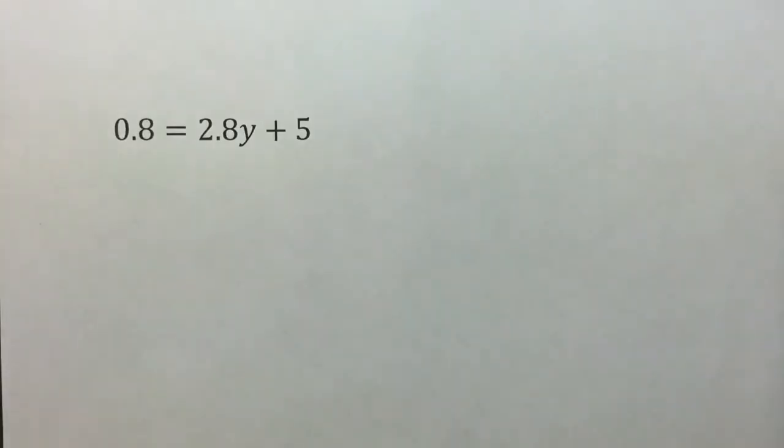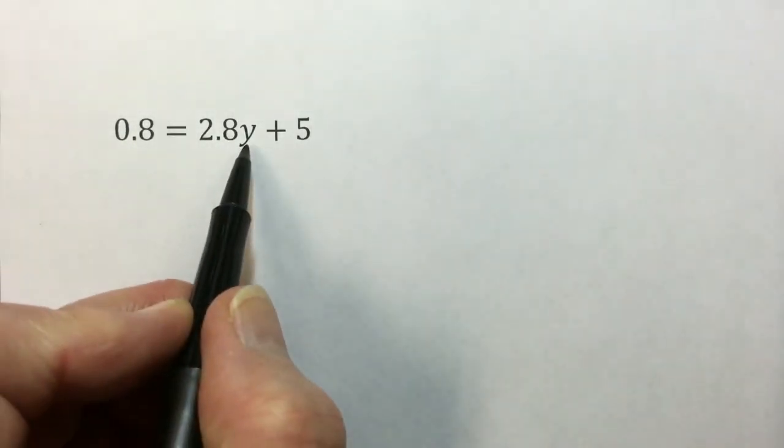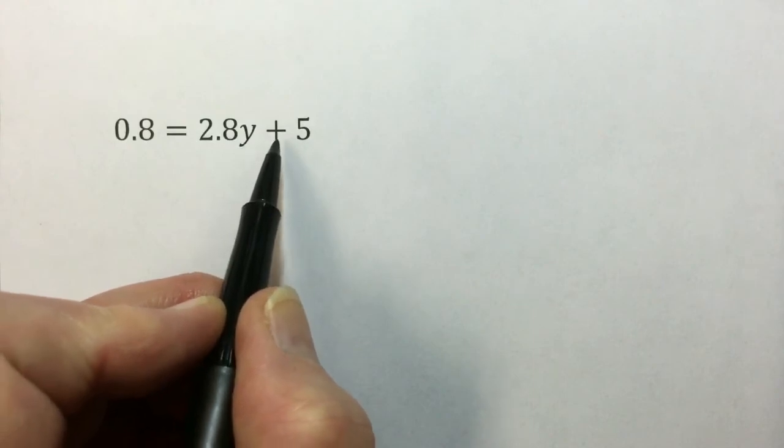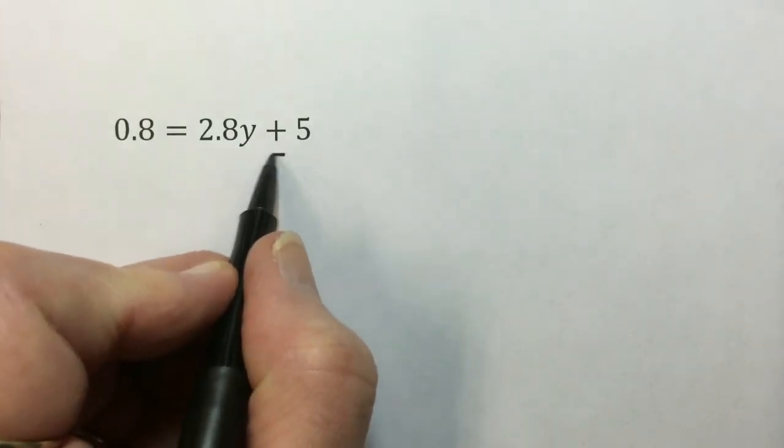In this last problem, decimals no different than fractions or integers. Our procedure is still the same. We want to get the variable by itself. Undo any addition or subtraction.